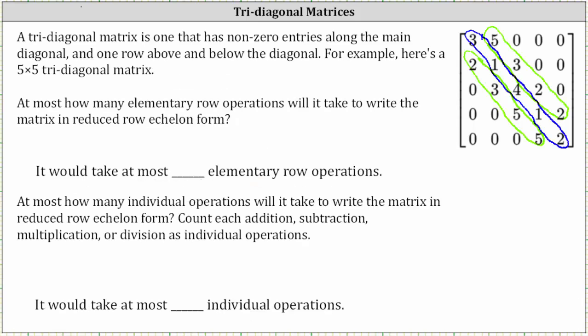To obtain zeros above and below the main diagonal, it would take up to one elementary row operation each, so that would be four plus four. And then it would take up to five elementary row operations to get ones along the main diagonal, so we'd have to add five. The sum is 13.